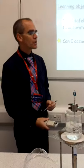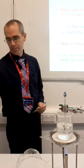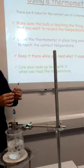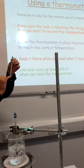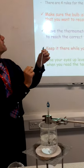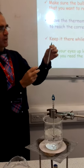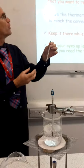Now when we use thermometers, there are four rules. The first rule is you need to make sure that the bulb, this part of the thermometer here, is touching, is in contact with the thing that you want to know the temperature of.